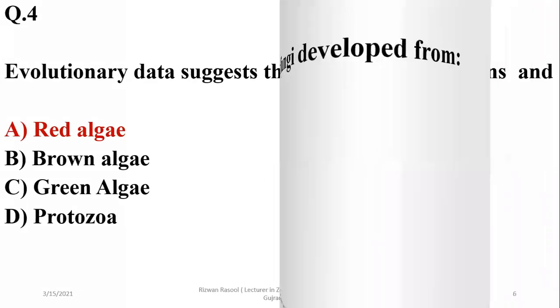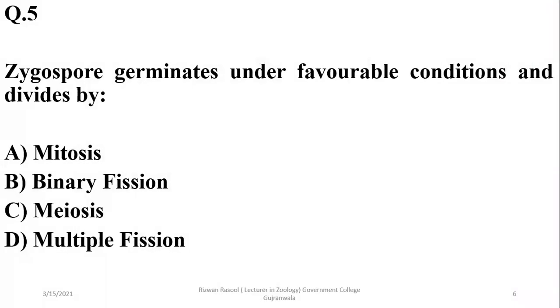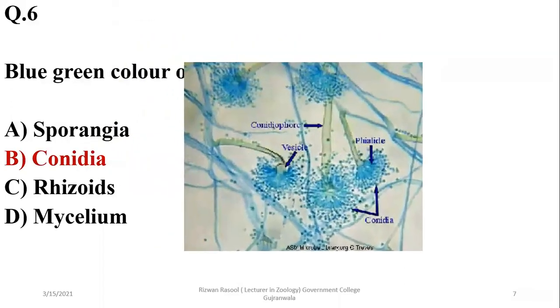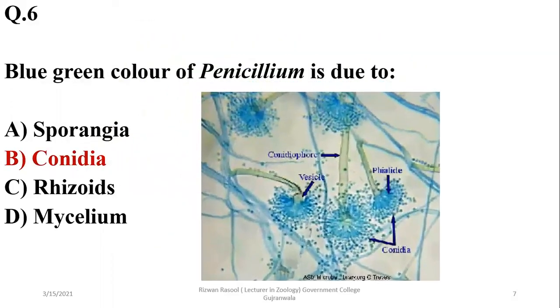Question number five: Zygospores are made under favorable conditions and divide by meiosis. Then in the life cycle of Rhizopus, blue-green color of Penicillium is due to their conidia, which are found at the tips of the hyphae and give characteristic color to the Penicillium colonies.